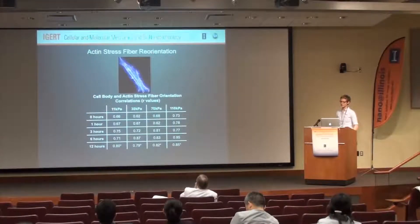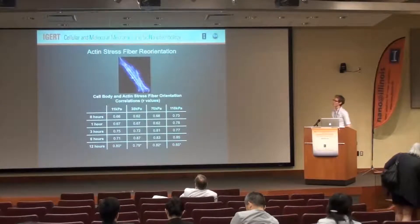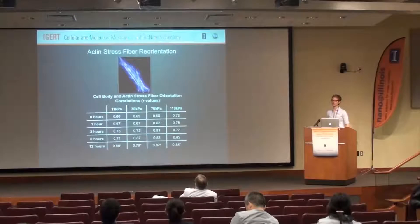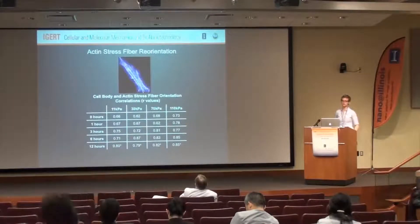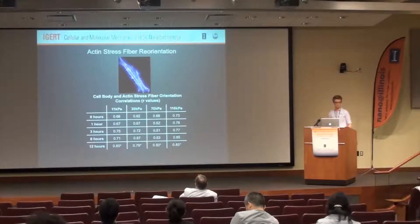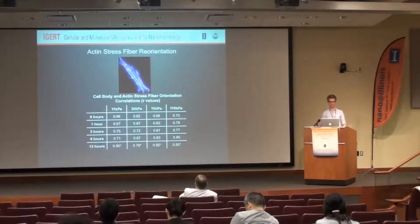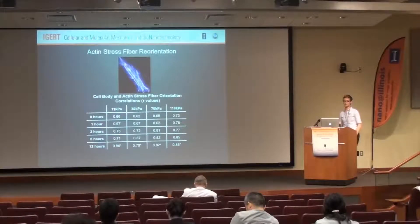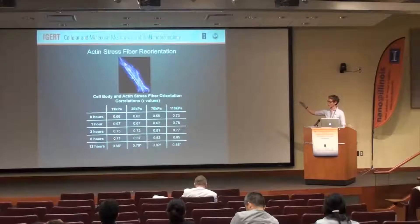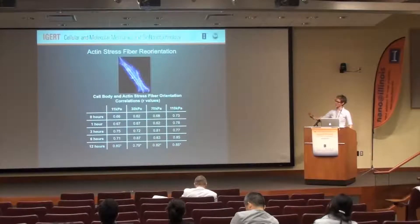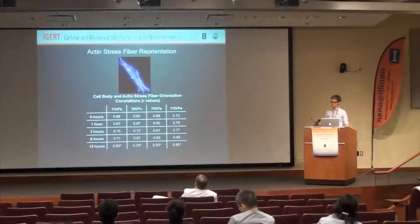The next data point is the actin stress fiber orientation. For this analysis, an ImageJ macro ran a fast Fourier transform to tease out where those actin stress fibers were and gave a mean orientation of the internal structures within the cell. I then correlated that number with the orientation of the cell as a whole, to suggest that internal structures may be driving the response because those are what are sensing the strain. Across all substrates over time, those R values increase, and going from 11 to 110 kPa the correlation strengthens.